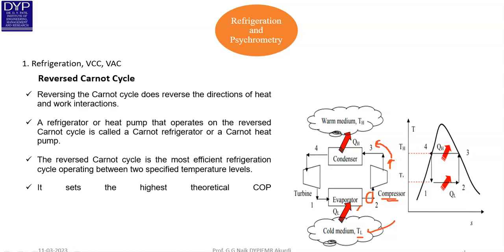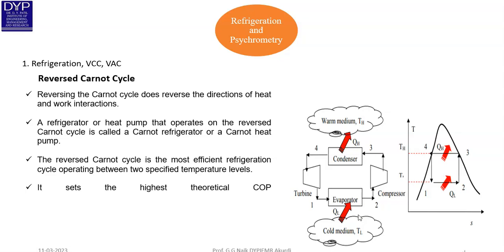The high-pressure refrigerant vapor is supplied to the condenser, where heat rejection takes place. The liquid refrigerant after the condenser is then supplied to the expansion valve. In the expansion valve, pressure drastically reduces and enthalpy remains constant. After that it is supplied back to the evaporator and the cycle continues.